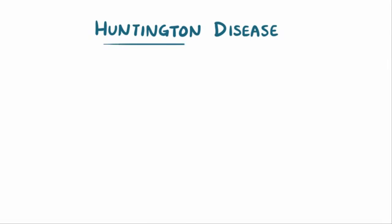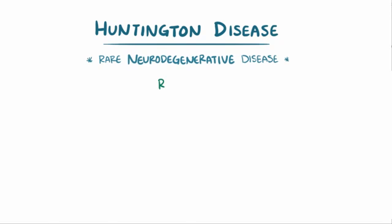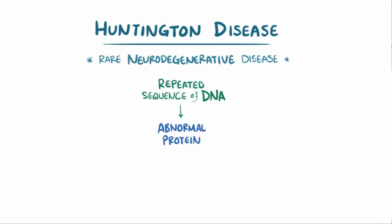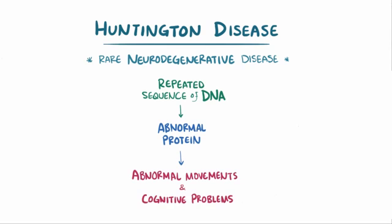Huntington disease, or HD, is a rare neurodegenerative disease that involves a repeated sequence of DNA that causes an abnormal protein to form, leading to abnormal movements and cognitive problems.